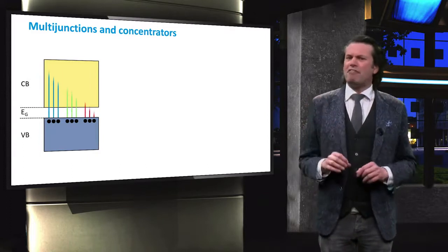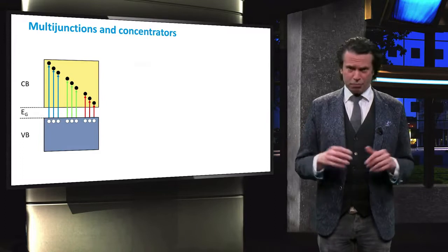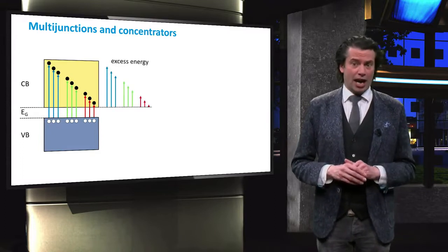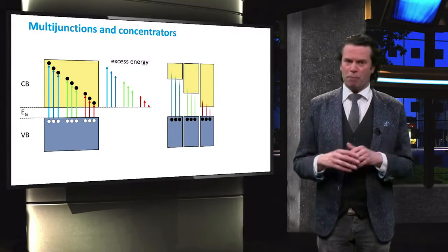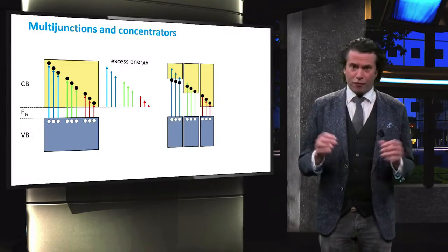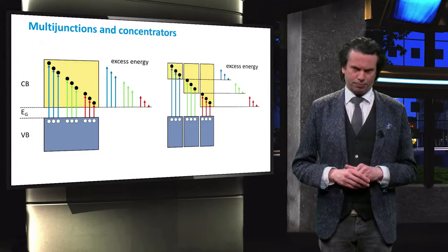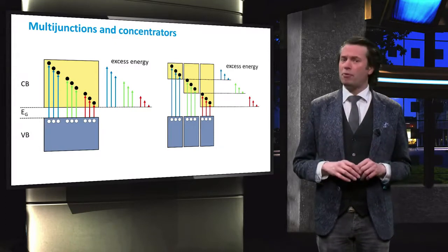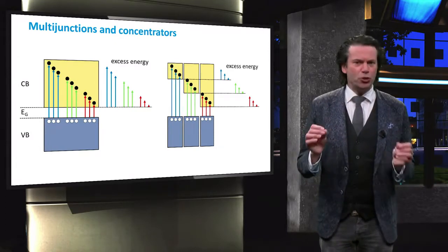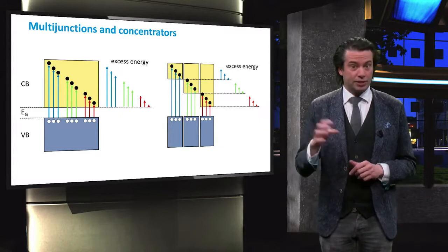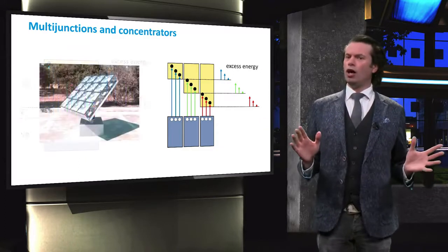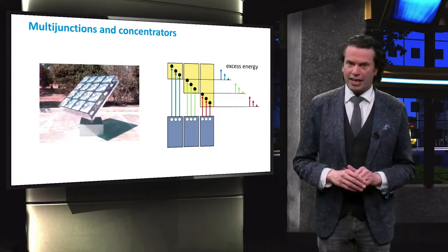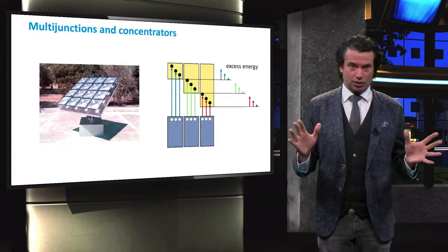Rather than having a single bandgap energy resulting in a large amount of excess energy for high energy photons, the multiple bandgap energies reduce the amount of excess energy and therefore the thermalization losses. Those high-performance multijunction cells can be used in combination with lenses and mirrors that concentrate the sunlight. A small solar cell area can then be illuminated by the intensity of many suns.